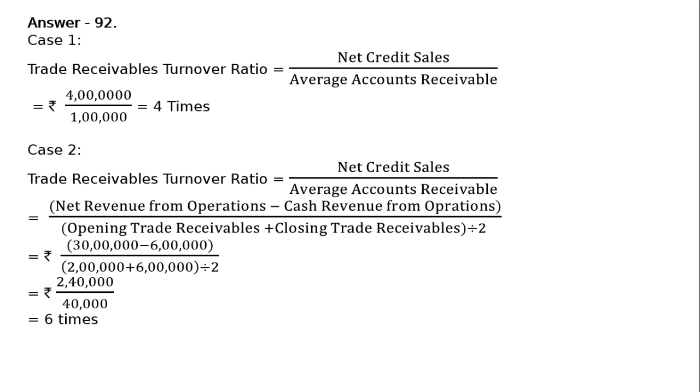Case 3: Cost of revenue from operations or cost of goods sold is Rs. 3 lakh. Gross profit on cost is 25%. Cash sales is 20% of total sales. Opening trade receivables Rs. 50,000, closing trade receivables Rs. 1 lakh.